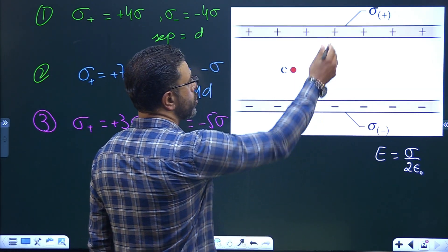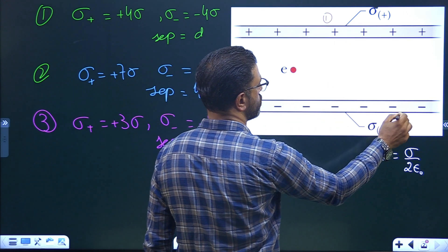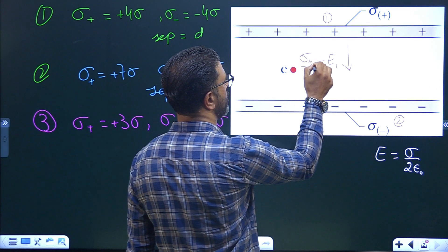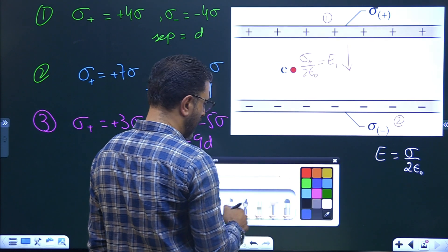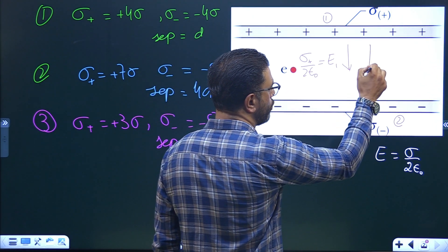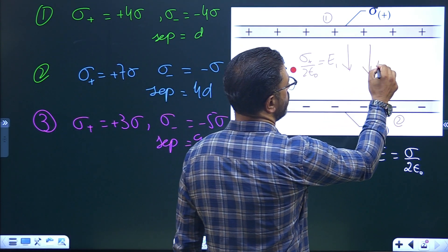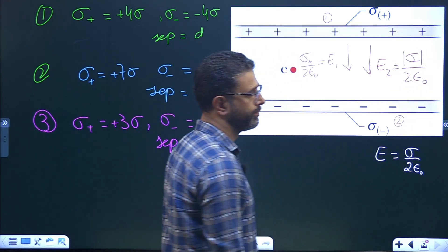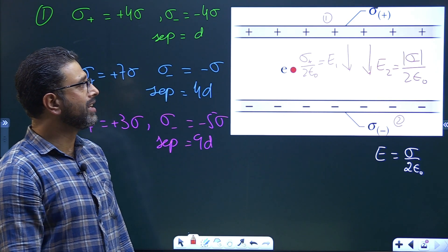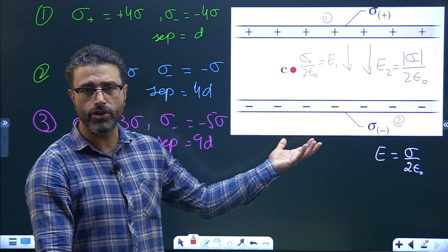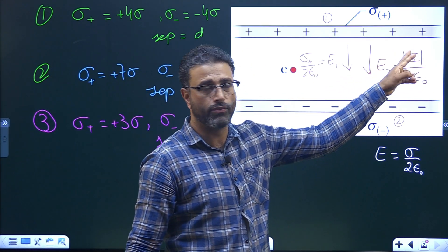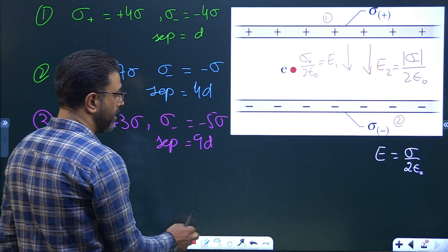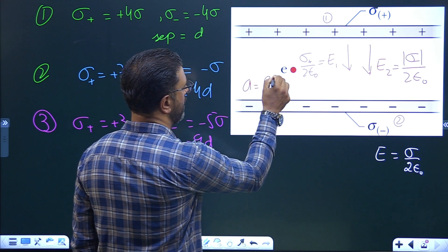Calling the two sheets 1 and 2: E1 is downward, away from the positive sheet, and equals σ-plus / (2ε₀). E2 due to the negatively charged sheet points toward it, so its magnitude equals |σ-minus| / (2ε₀). The two fields are in the same direction, so the total field is simply their sum — and remember, we take the magnitude of sigma-minus, not the negative sign.